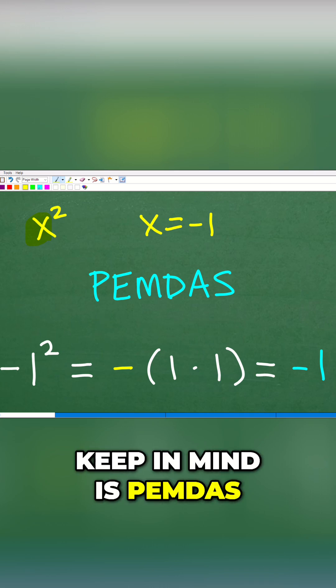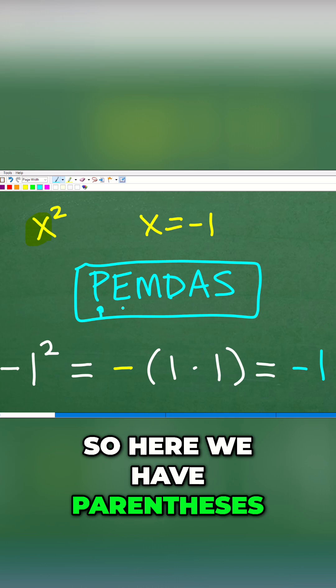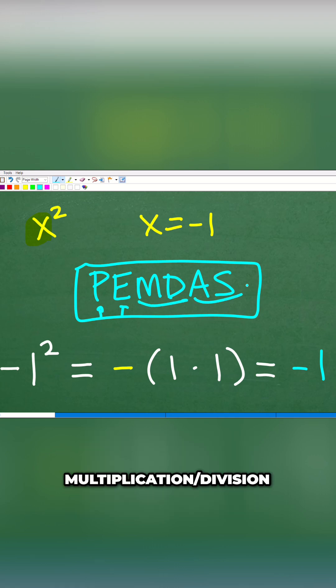Okay, what we have to keep in mind is PEMDAS, the order of operations. So here we have parentheses, exponents, multiplication, division, addition, subtraction.